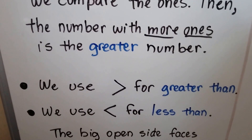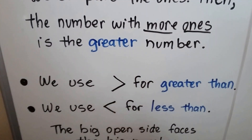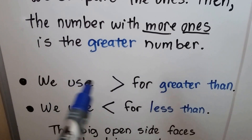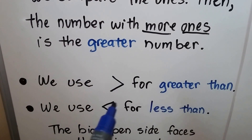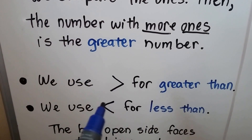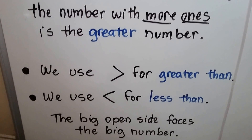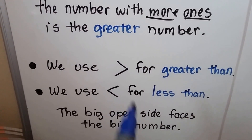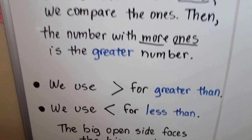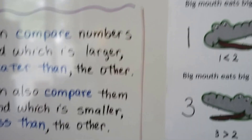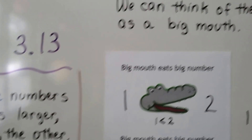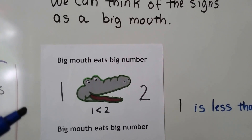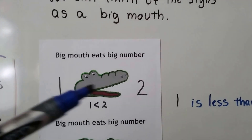We use this symbol for greater than — it's open and it's facing to the left. We use this symbol for less than. The big open side faces the bigger number. I have a trick for you to remember that.